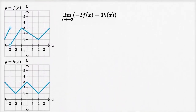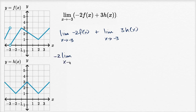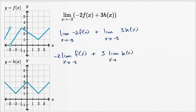We have the limit of negative two times f(x) plus three times h(x) as x approaches negative three. Using our limit properties, this equals negative two times the limit of f(x) as x approaches negative three, plus three times the limit of h(x) as x approaches negative three. We need to figure out each of those limits.